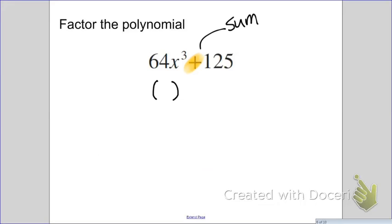A, it seems like, is more than just X in this problem. Because I have a 64 here. So, I want to ask myself, what cubed made 64X cubed? Well, 4 cubed makes 64 and X cubed will make X cubed. 125. What cubed made that? 5 cubed made 125. So, this is our A, and this is our B.